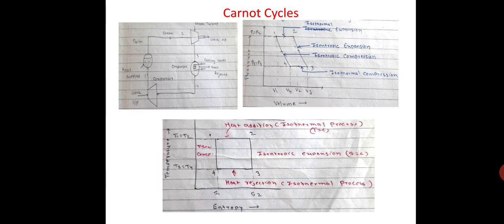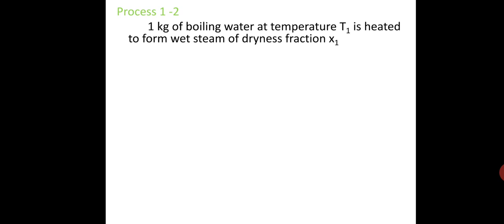Process 1 to 2: 1 kg of boiling water at temperature T₁ is heated to form wet steam of dryness fraction x₁. The heat is absorbed at constant temperature T₁ and pressure P₁ during this operation.